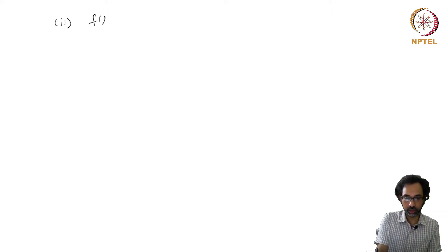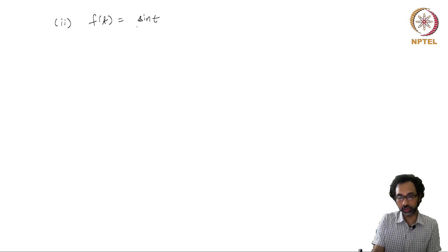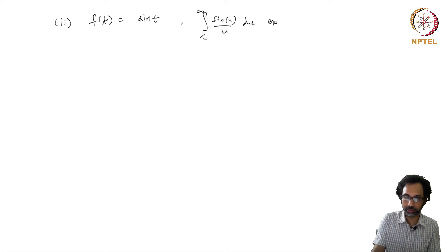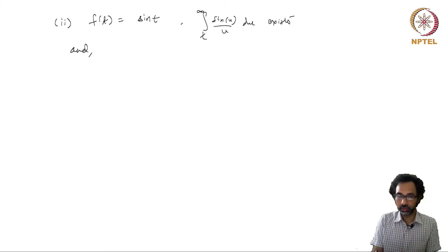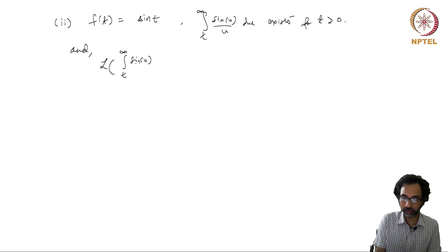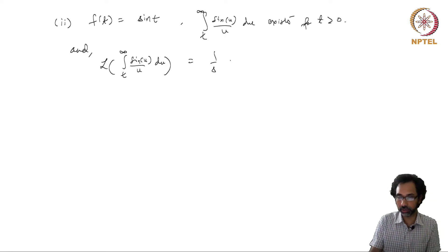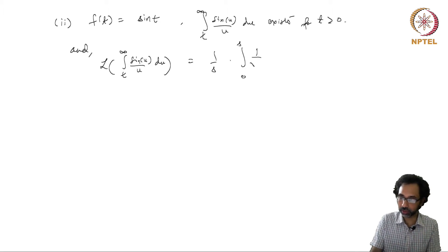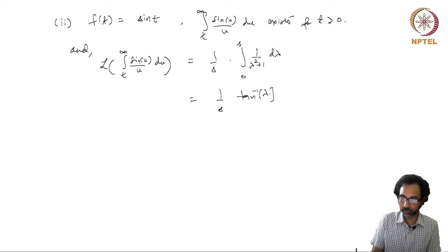Similarly, if we take f(t) = sin(t), then again we can show that the integral ∫ from t to ∞ of sin(u)/u du exists for t > 0. We also have that the Laplace transform of this integral is (1/s) times ∫ from 0 to s of the Laplace transform of sin, which is 1/(λ² + 1) dλ. This equals (1/s) tan⁻¹(λ) from 0 to s, giving (1/s) tan⁻¹(s) — or equivalently (1/s) tan⁻¹(1/s) depending on the form used.